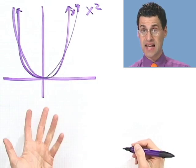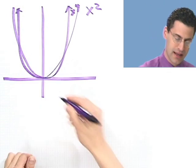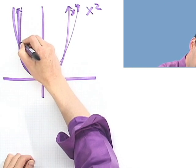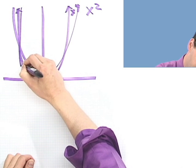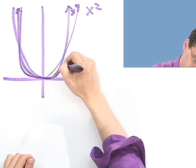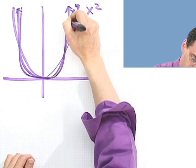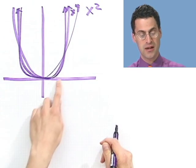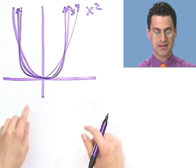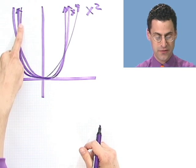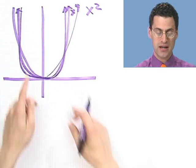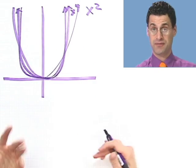x to the sixth would have an even more dramatic shape. It would start a little further in, come down a little sharper, but still come up — still smooth, no corners. Always very smooth and symmetric. You can see what's happening: it's converging to something that looks very sharp. The higher the degree, the more it looks like that if it's even.